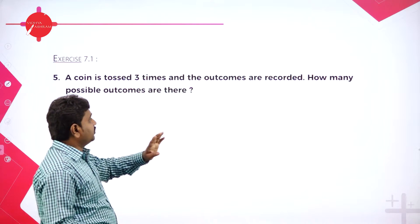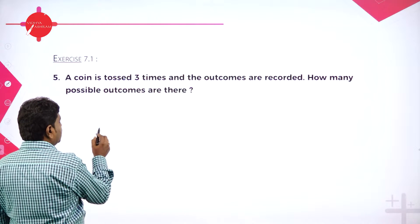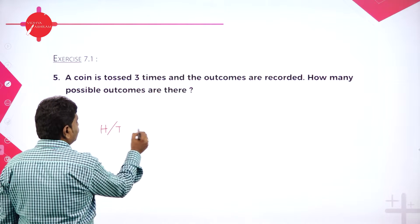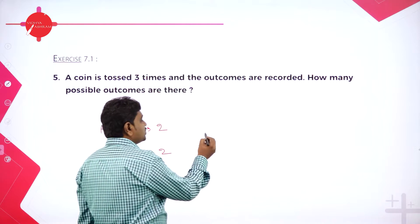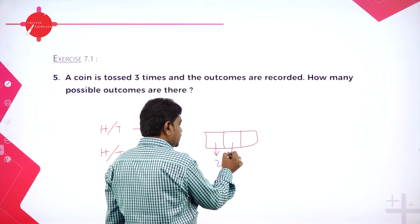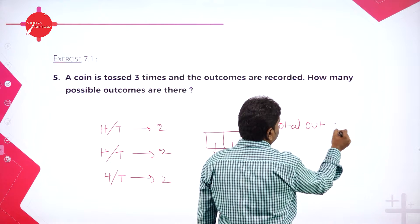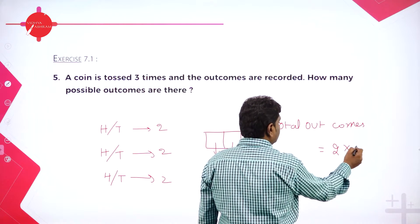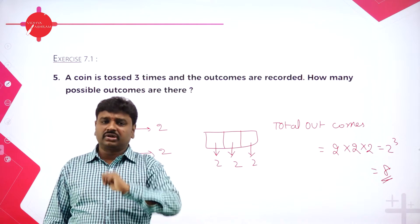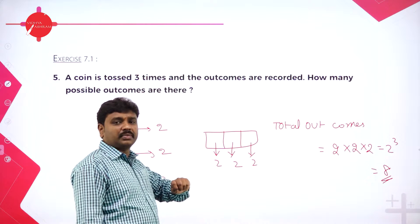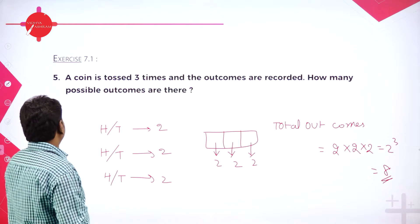Next problem: a coin is tossed three times and outcomes are recorded. How many possible outcomes are there? The first toss gives head or tail — two ways. The second toss also gives two ways. The third toss also gives two ways. So total outcomes equals two into two into two, or two cubed, which is eight.